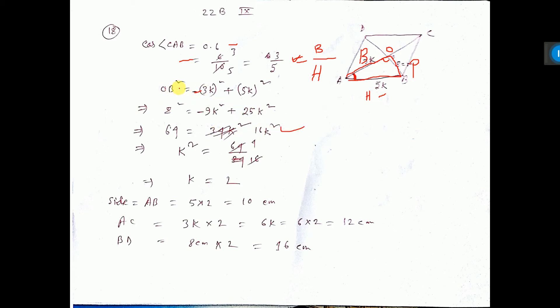Now OB value is given in the question as 8 cm. That is why I put here 8. So K square value comes. Now what is the length of AB? 5 into 2, that is 10 cm.